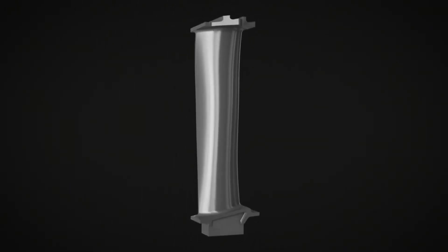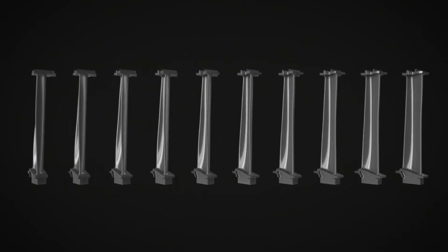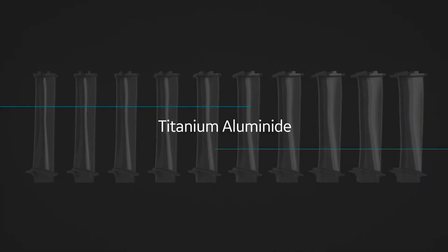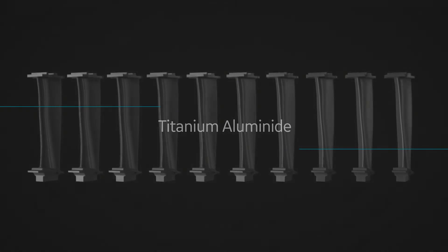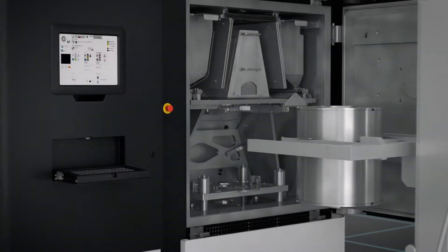With Spectra H's high heat capability, users can incorporate new alloys such as titanium aluminide into production to expand their offerings, including high-temperature anti-corrosive materials.